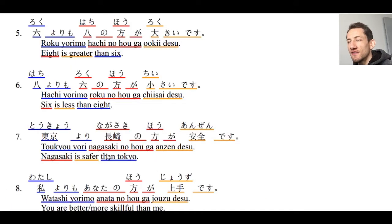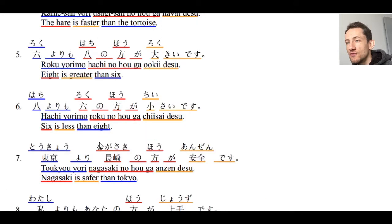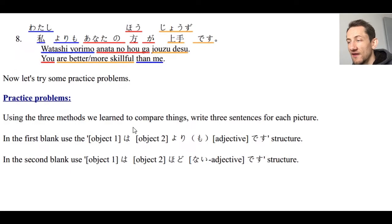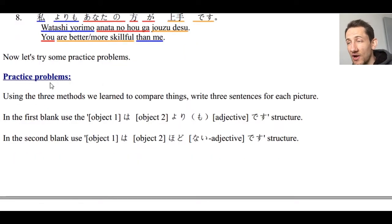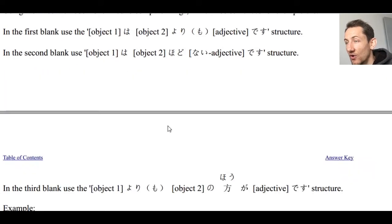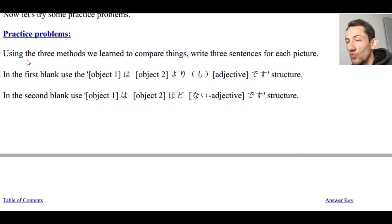Remember, if you want to go back and look at the example sentences from part one and part two, you can compare — the meaning is the exact same, but how we structure the sentence is different, that's all. If you're ready for the practice problems, we're going to use all three methods we've learned to compare things: yori, hodo, and no hoga. We'll use pictures and compare using all three structures.